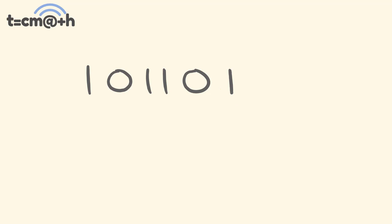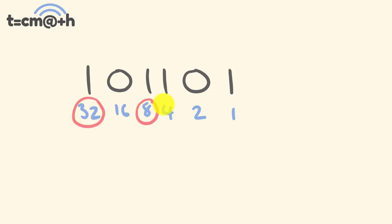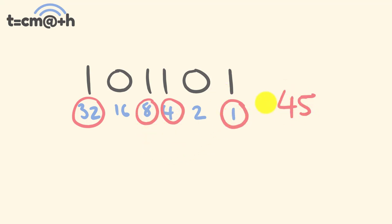Last example — convert the binary number to decimal. Doubling out the place values: 1, 2, 4, 8, 16, 32. The answer is 32 plus 8 plus 4 plus 1 — that's 32, 40, 44 — our answer is 45.